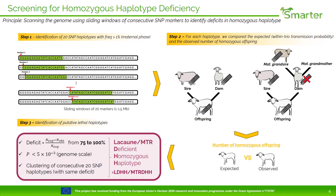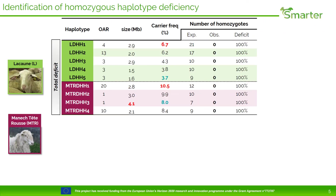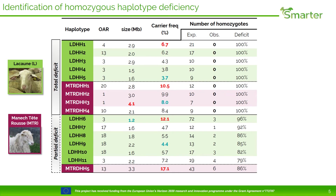Those larger haplotypes are called Lacaune or Manech Tête Rousse deficient homozygous haplotypes. We identified 5 haplotypes in Lacaune and 4 haplotypes in Manech with total deficit — meaning no homozygous animal was genotyped compared to the expected number. This expected number of homozygous animals reaches 21 in Lacaune and 12 in Manech. These haplotypes have a frequency of heterozygous carriers between 3.7% and 6.7% in Lacaune, and 8% to 10.5% in Manech. We also identified 6 haplotypes in Lacaune and 1 in Manech with partial deficit, from 75 to 96%, where 1 to 6 animals were genotyped. These haplotypes have a frequency of heterozygous carriers between 4.4% and 12.1% in Lacaune, and 17.1% for haplotype 5 in Manech.